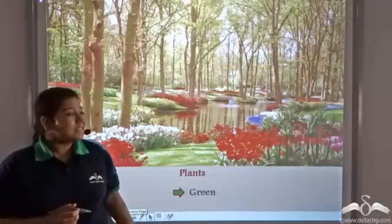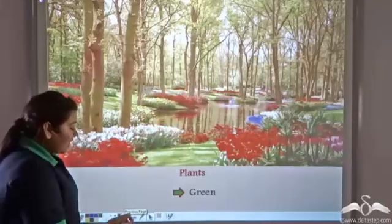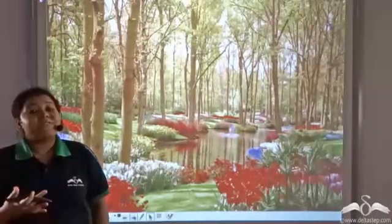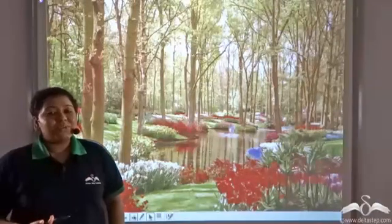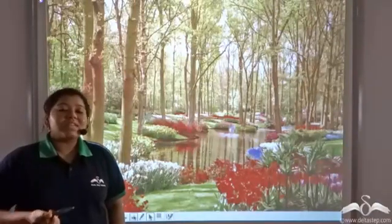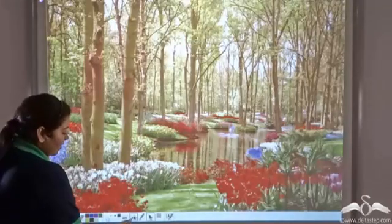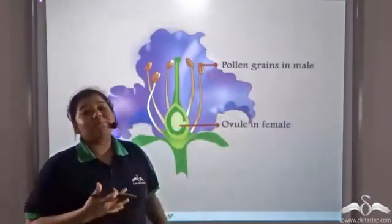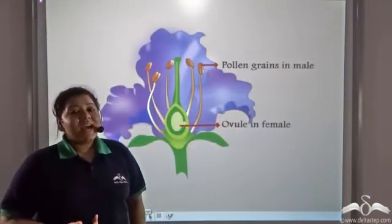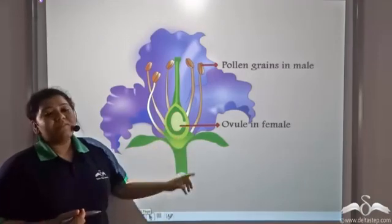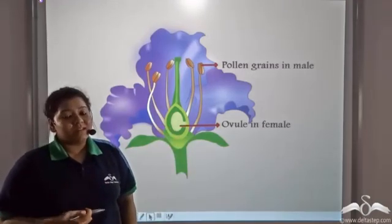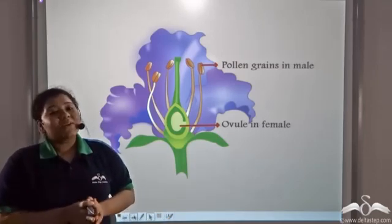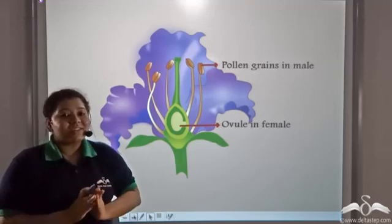All plants are green. The different flowering plants that you see around make nature very vibrant. We already know that the flower is the reproductive part of the plant. Male flowers contain pollen grains, which is the male reproductive part, and female flowers have ovules, which is the female reproductive part. Fertilization between these two reproductive cells causes the formation of the next generation.